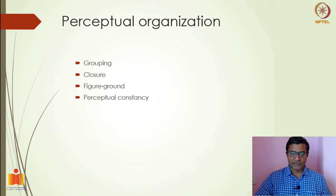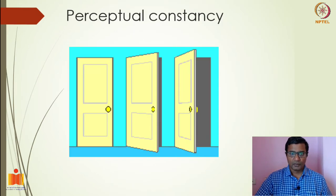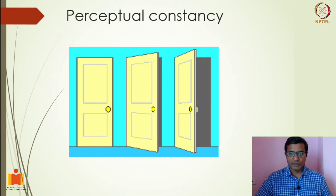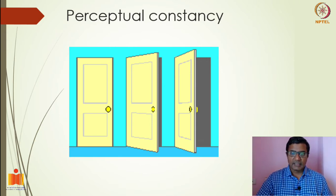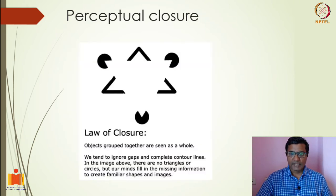These principles are suggested by Gestalt theories. Many of these principles in organizing sensory stimuli are applicable to social perception also. For example, the idea of perceptual constancy, which means we tend to see things as constant — we do not perceive change when it happens over a period of time. Similarly, the idea of closure.